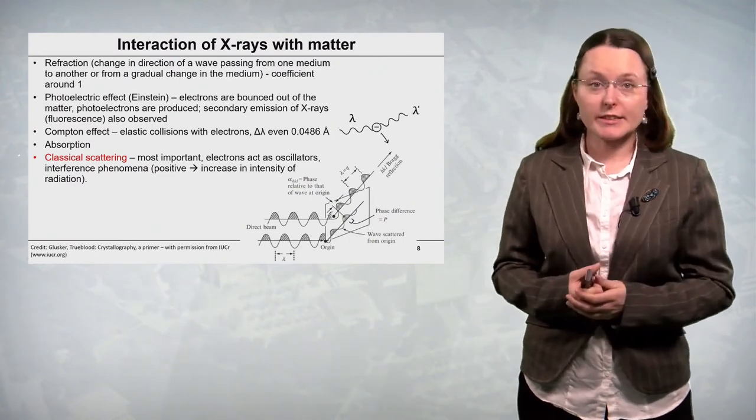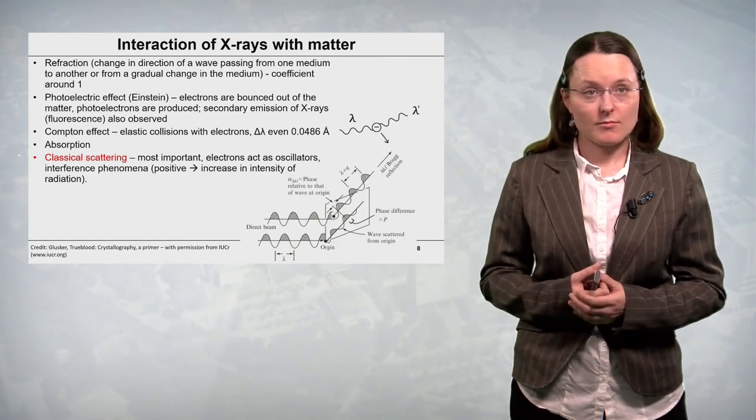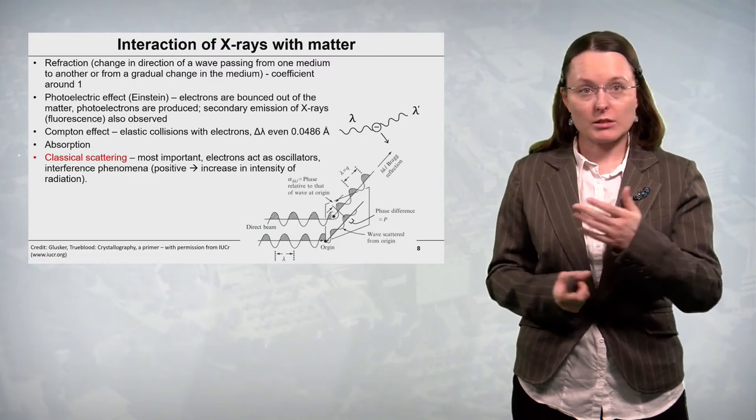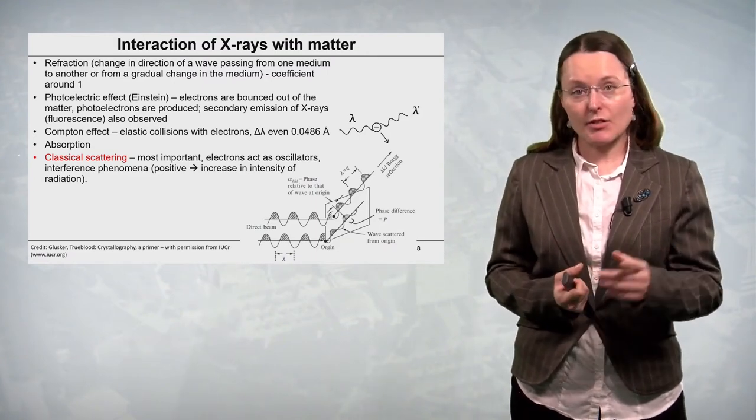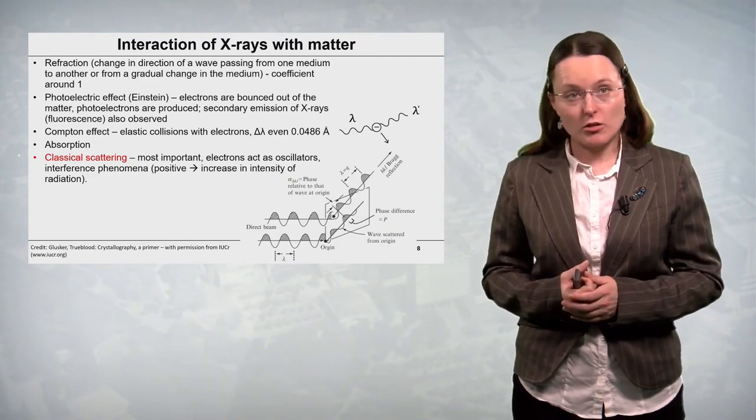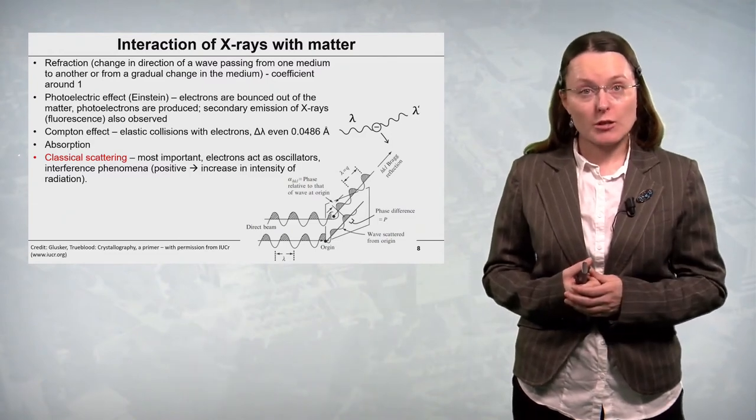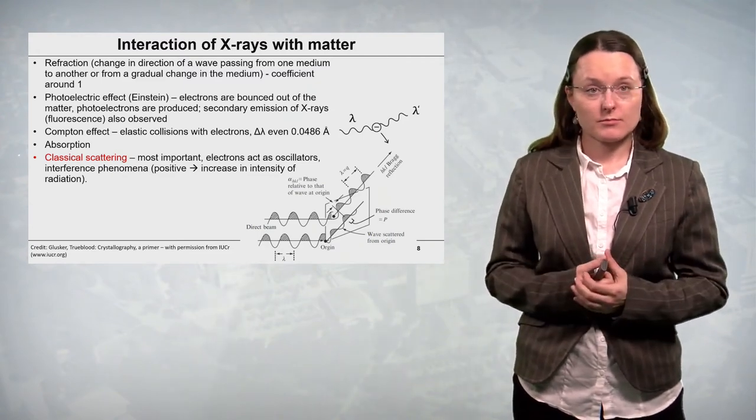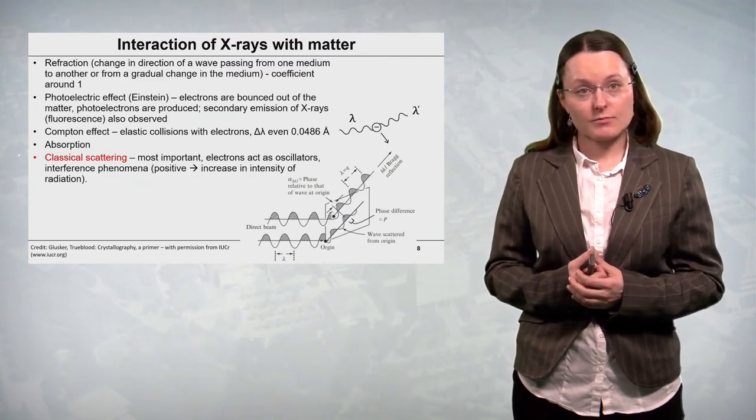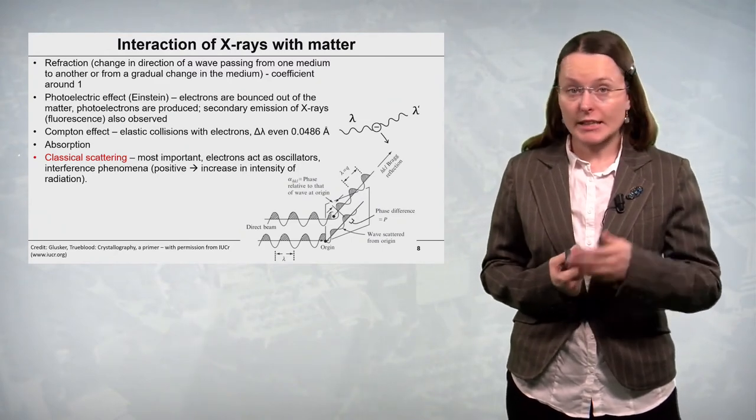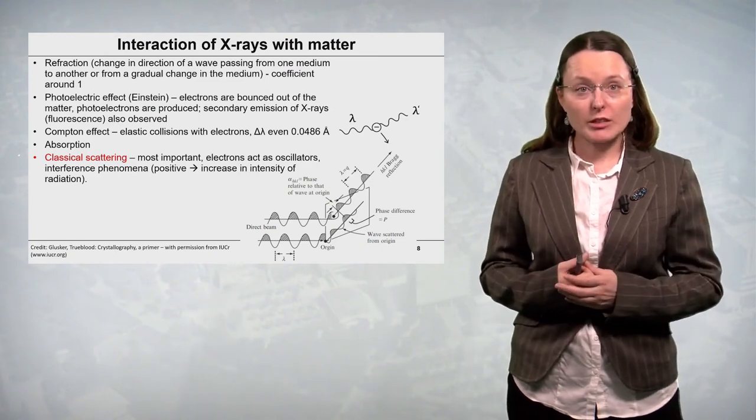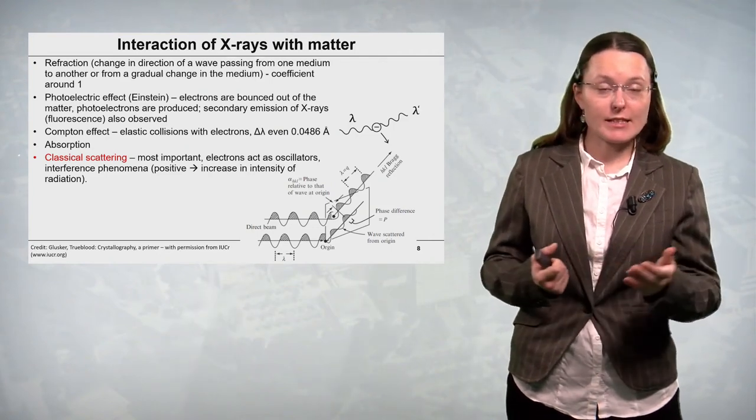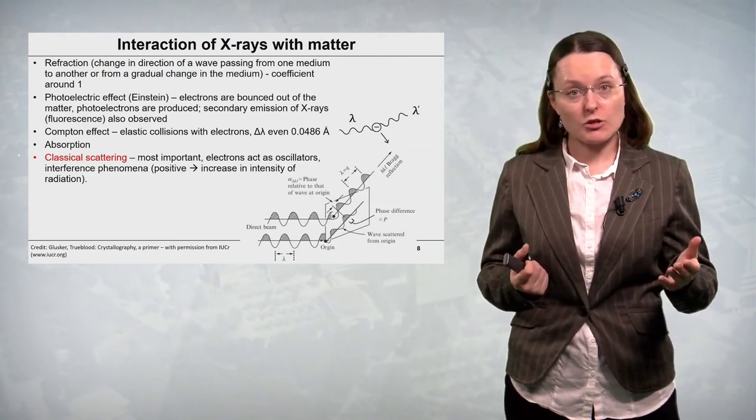So let's discuss more about the interaction of X-rays with matter. We can consider refraction, which is a change in direction of a wave passing from one medium to another or for a gradual change in the medium. This refraction in case of X-rays is negligible because the refraction coefficient is around one. This is also the reason for which we do not have X-ray microscope, we do not have X-ray focusing lenses. Secondly, we have a photoelectric effect which was investigated in detail by Einstein. In this photoelectric effect electrons are bounced out of the matter and the photoelectrons are produced. This also leads to a secondary emission of X-rays or fluorescence and adds to an X-ray diffraction pattern background.